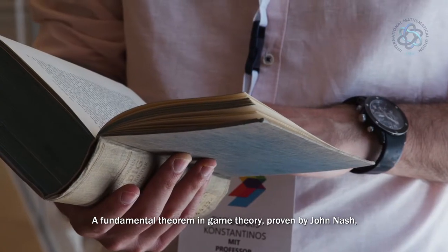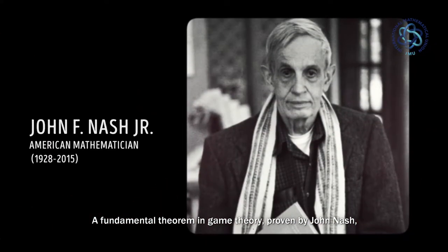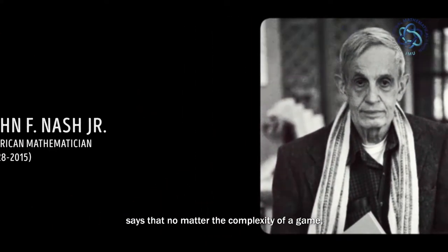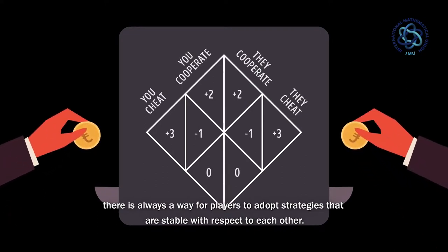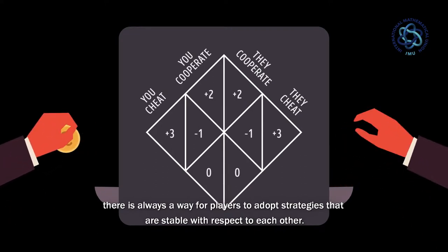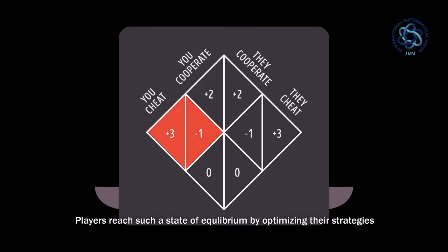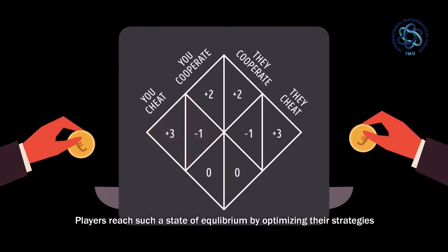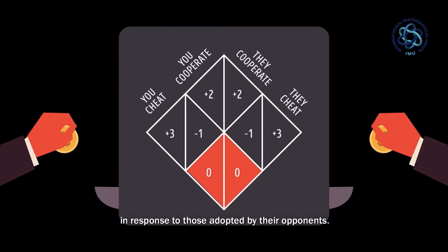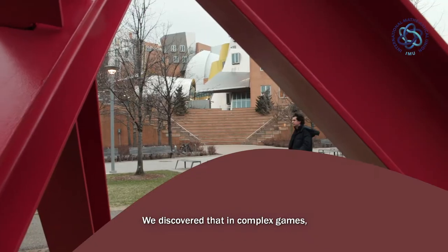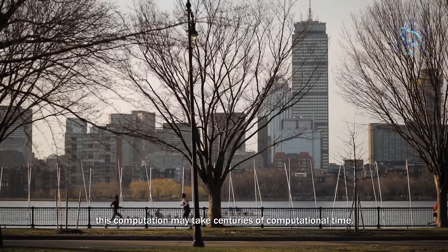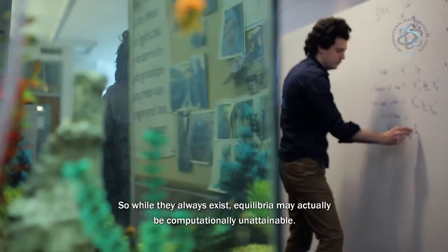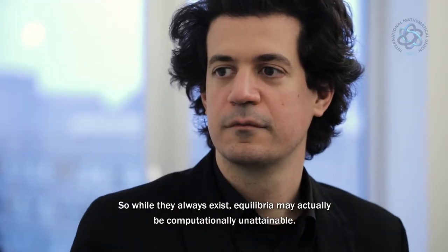A fundamental theorem in game theory, proven by John Nash, says that no matter the complexity of a game, there's always a way for players to adopt strategies that are stable with respect to each other. Players reach such a state of equilibrium by optimizing their strategies in response to those adopted by their opponents. We discovered that in complex games, this computation may take centuries of computational time. So while equilibria always exist, they may actually be computationally unattainable.